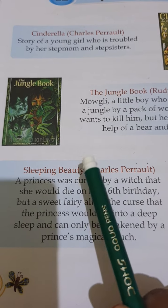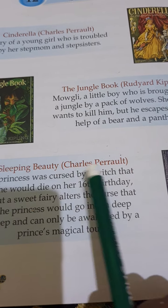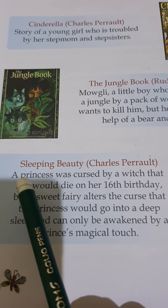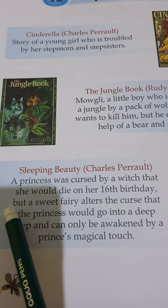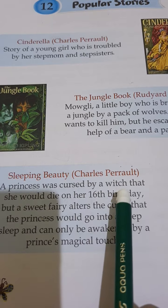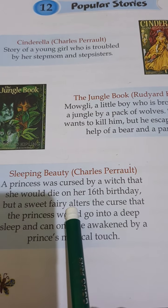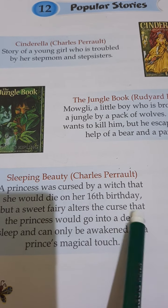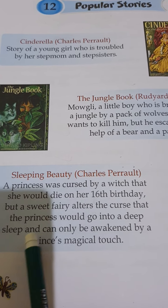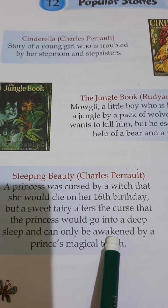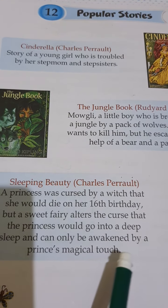The next one is Sleeping Beauty, written by Charles Perrault. A princess was cursed by a witch that she would die on her 16th birthday, but a sweet fairy alters the curse so that the princess would go into a deep sleep and can only be awakened by a prince's magical touch.